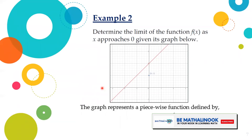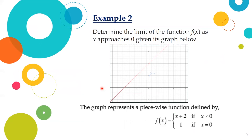Let us take another example. Determine the limit of the function f(x) as x approaches 0 given its graph. Notice that the graph represents a line with a hole and a point at (0, 1). The graph represents a piecewise function defined by f(x) equals x plus 2 if x is not equal to 0, and 1 if x is equal to 0.